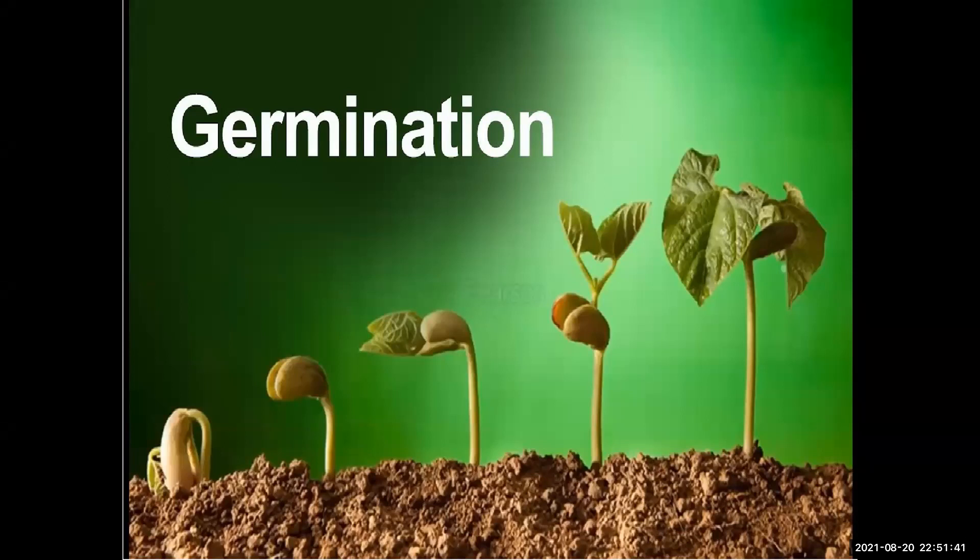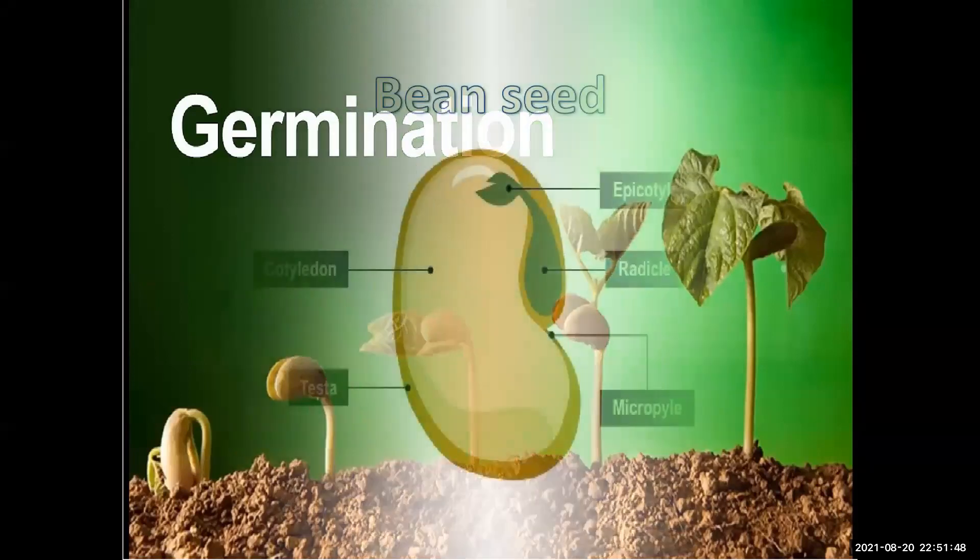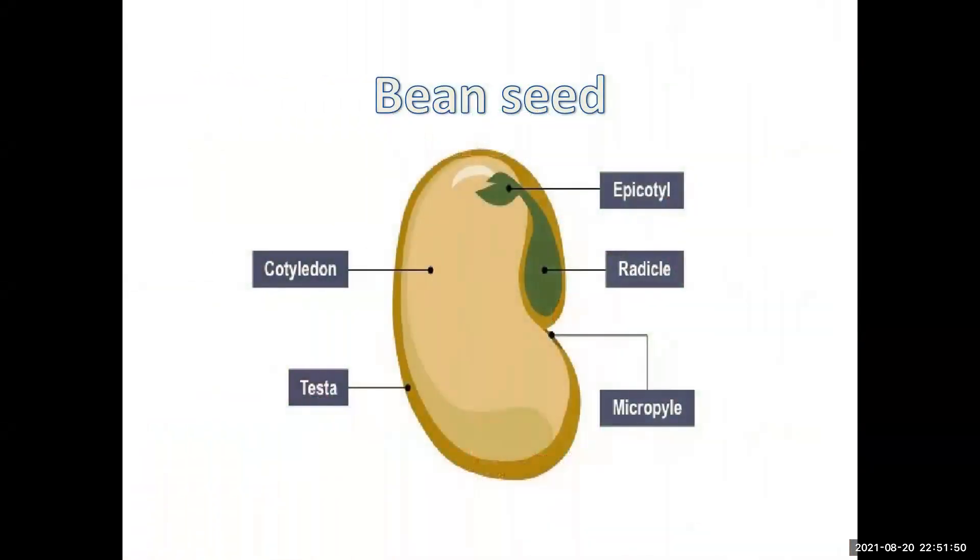Before discussing the germination of seeds, let us know the different parts of seeds. A seed has three parts: seed coat, cotyledon, and an embryo.